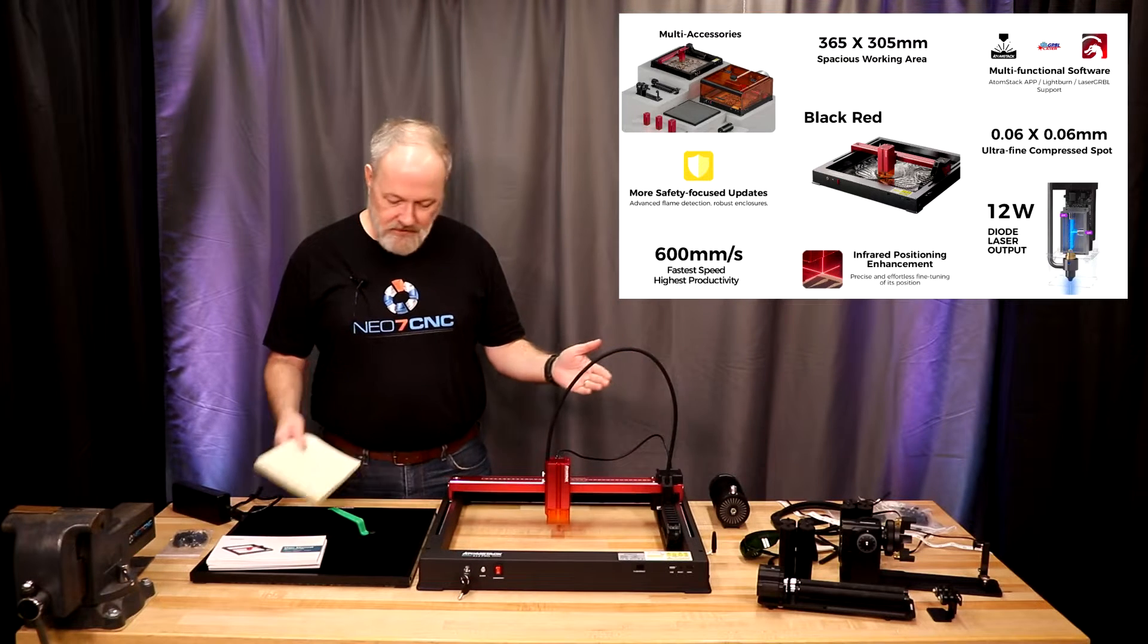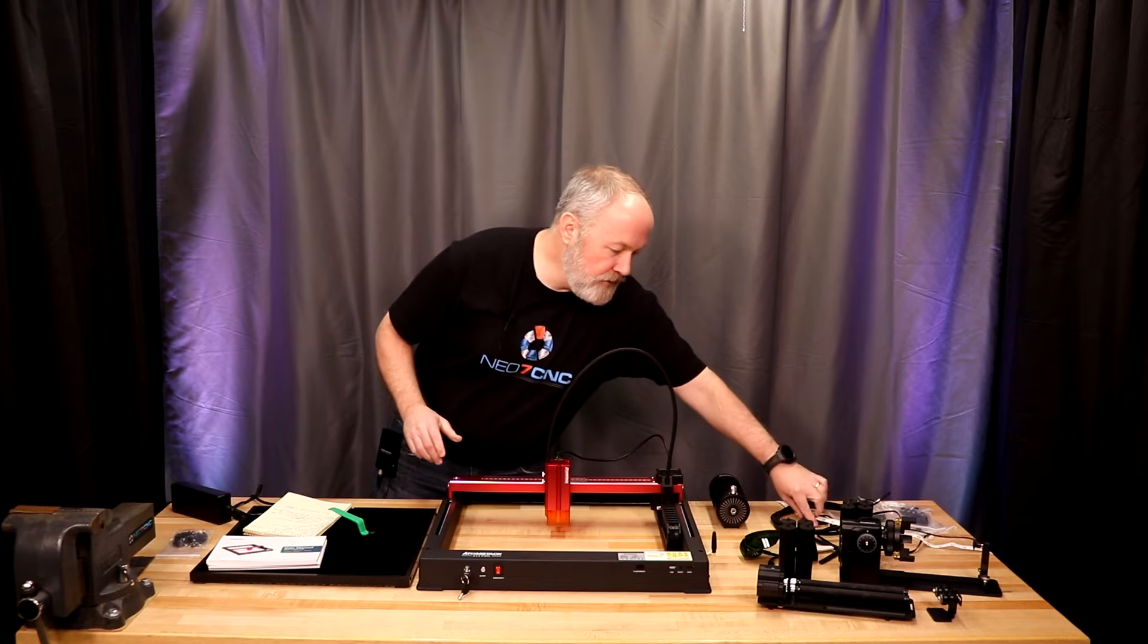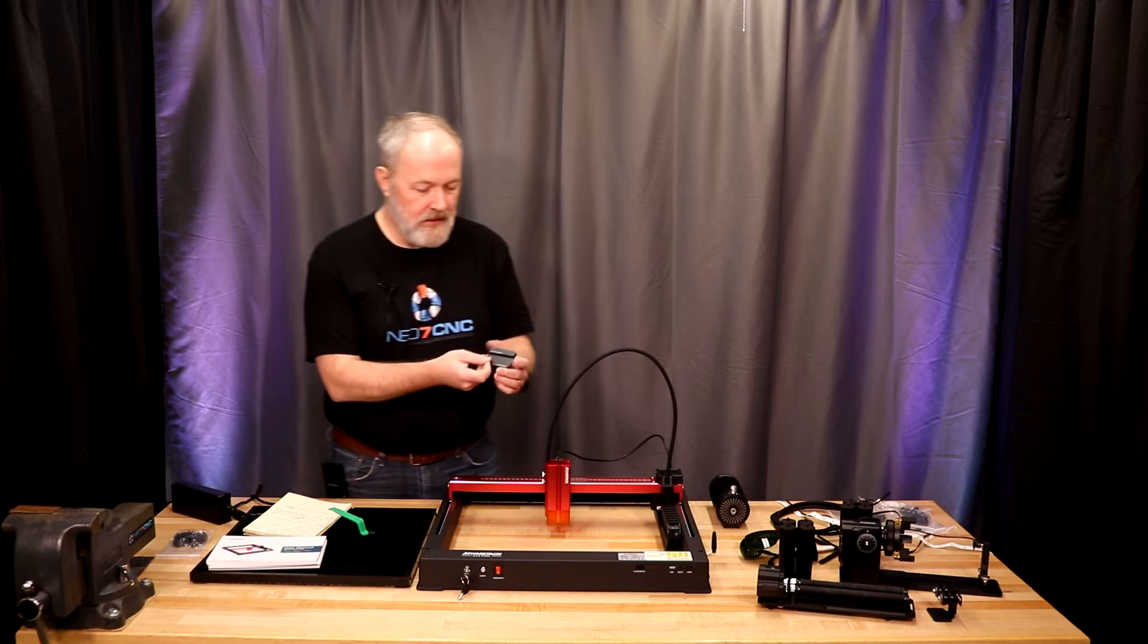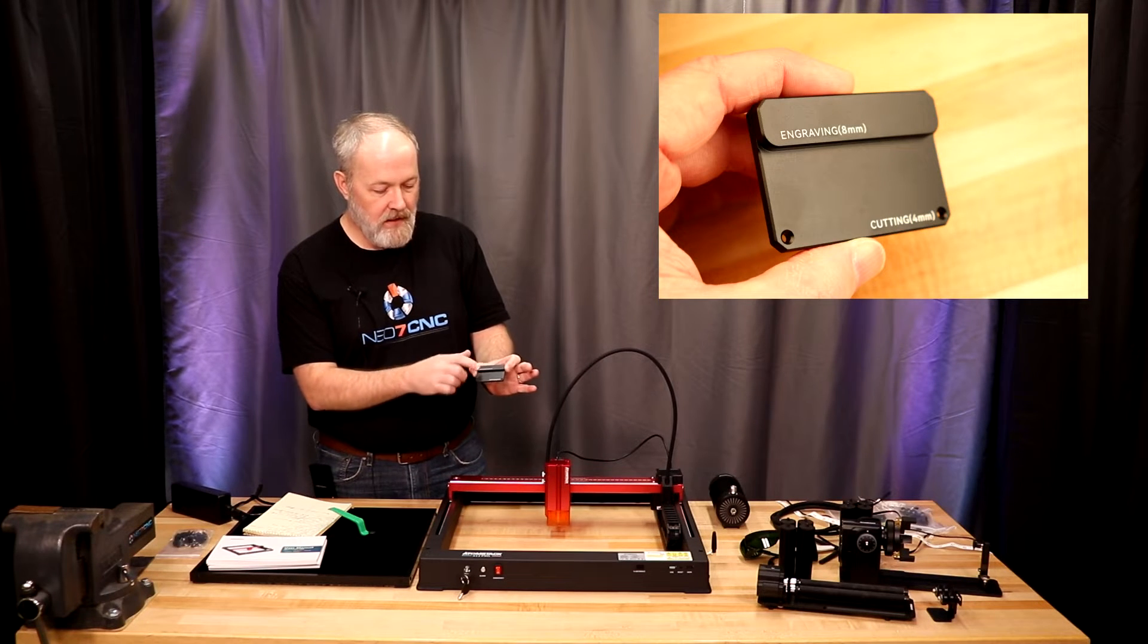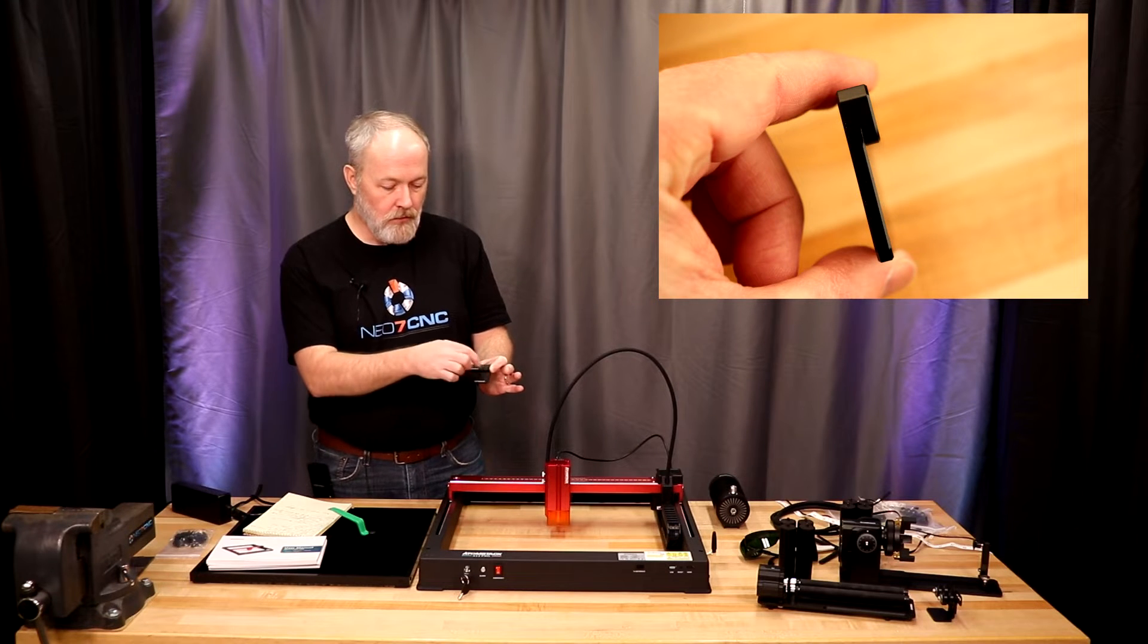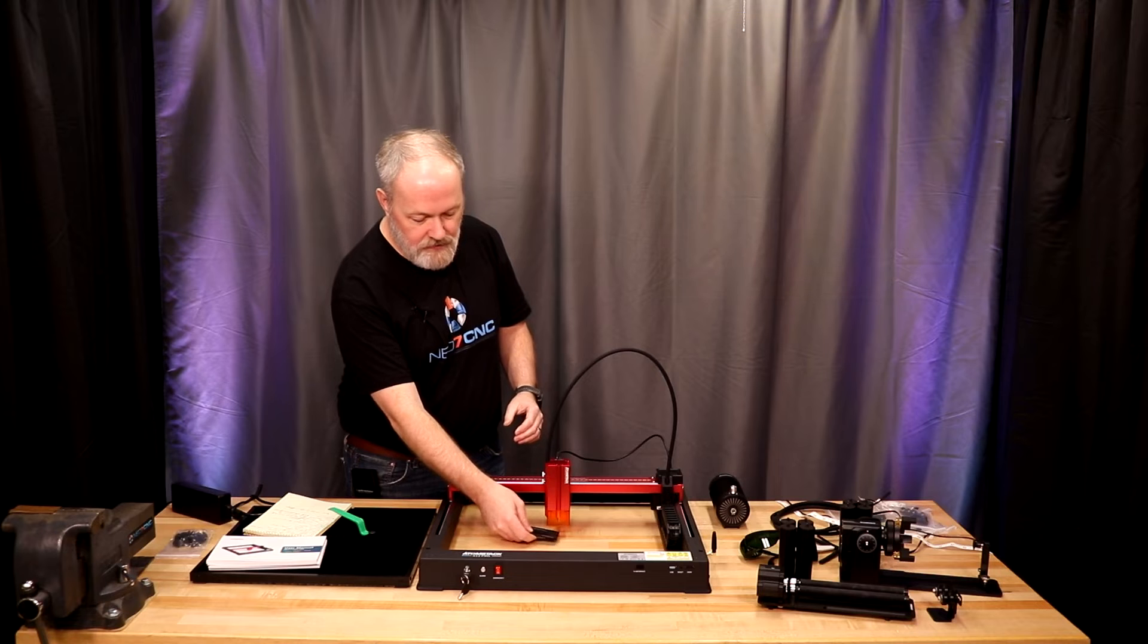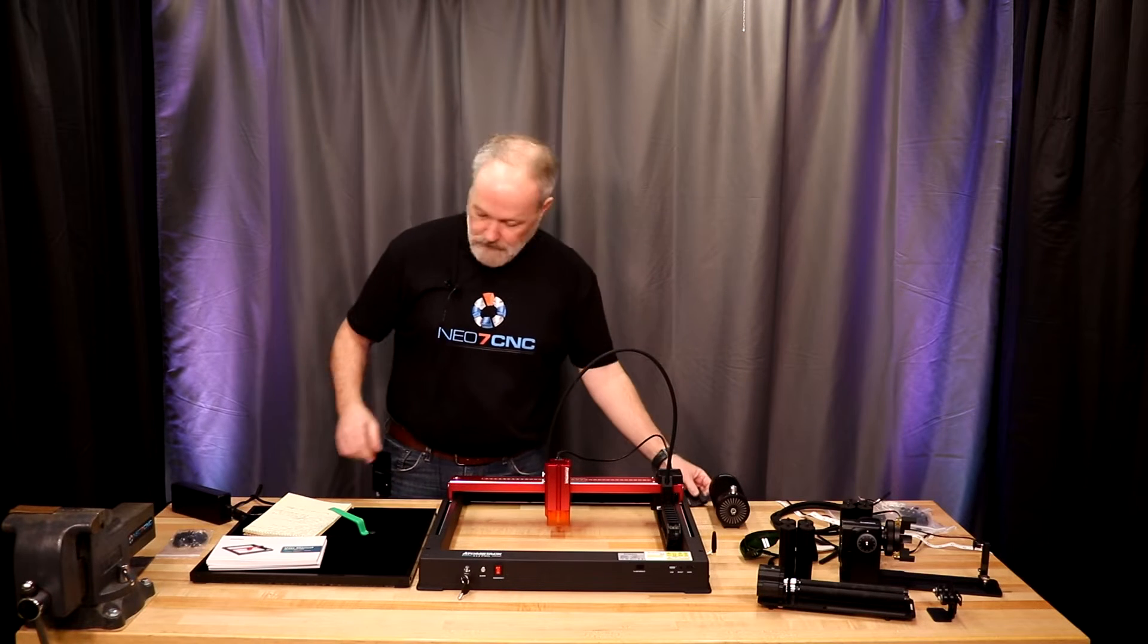The focus is very easy. We have two thumb screws on the side. You just lower it down and you use this focusing gauge that is nice anodized aluminum. It has a step for engraving and a step for cutting. So depending on what you want to do, you'll drop the lens cover down onto the right ledge to get the result that you're looking for.